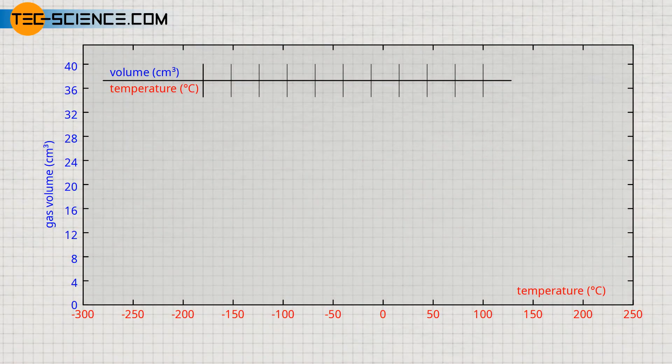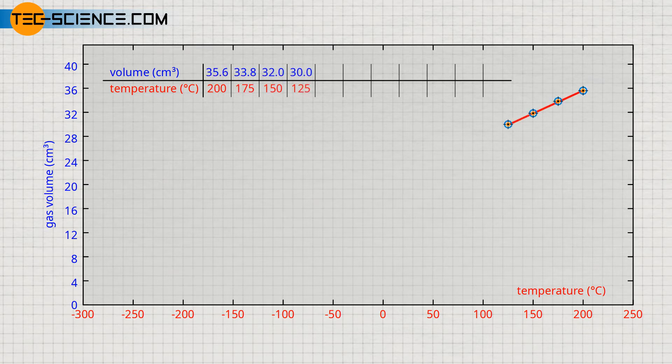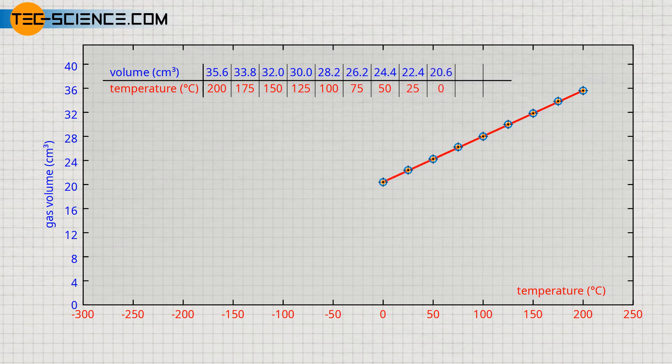If the experiment is now carried out for different temperatures and the resulting temperature-volume relationship is graphically represented, a linear connection becomes apparent. This means that the volume increases continuously with an increase in temperature and decreases uniformly with a decrease in temperature.